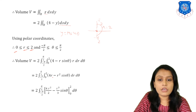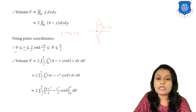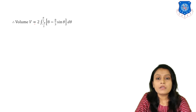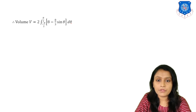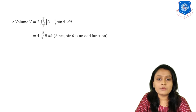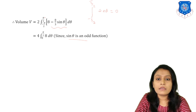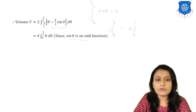Substituting the limits gives: volume equals 2 times the integral from minus pi/2 to pi/2 of (8 minus 8/3 sin theta) d-theta. Since sin theta is an odd function, the integral from minus pi/2 to pi/2 of sin theta equals 0, so that term vanishes. The integral from minus pi/2 to pi/2 of 8 d-theta is converted to 2 times the integral from 0 to pi/2, giving 4 times the integral from 0 to pi/2 of 8 d-theta.